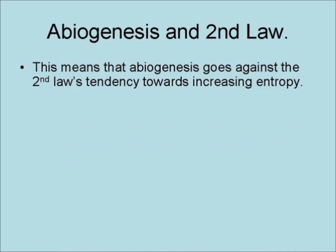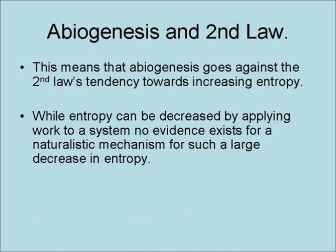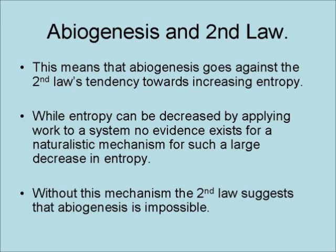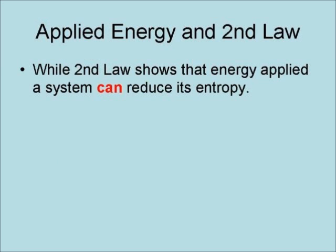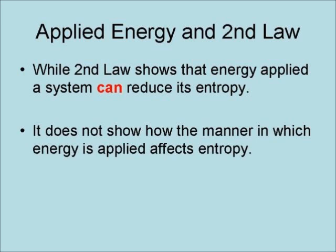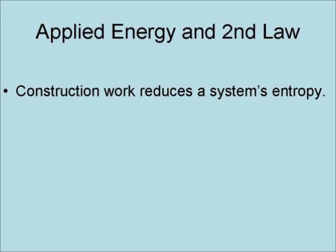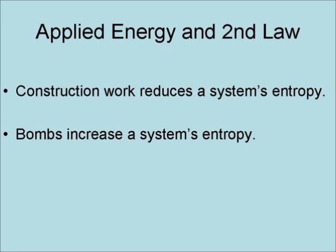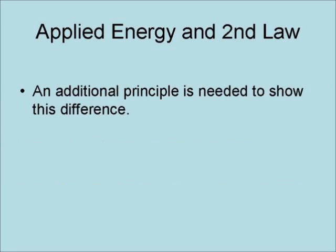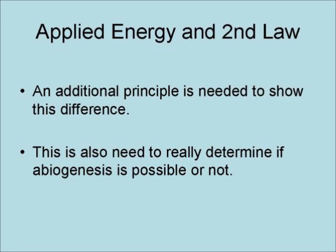This means that abiogenesis goes against the second law's tendency towards increasing entropy. While entropy can be decreased by applying work to a system, no evidence exists for a naturalistic mechanism for such a large decrease in entropy. Without such a mechanism, the second law of thermodynamics suggests that abiogenesis is impossible. However, the second law does not deal with how the manner in which energy is applied to a system affects entropy. It does not show the difference between construction work and a bomb. Construction work reduces a system's entropy, while bombs increase a system's entropy. An additional principle is needed to show this difference, and is also needed to really determine if abiogenesis is possible or not.